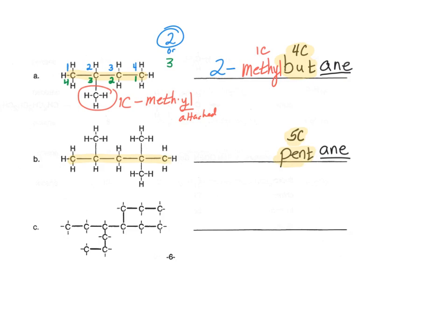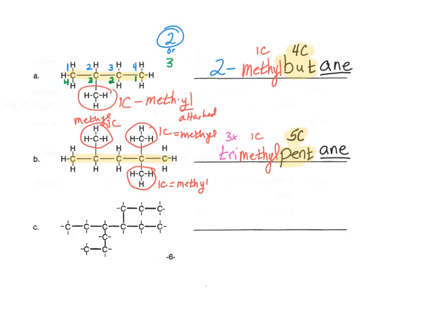We have three substituents, each with one carbon. One carbon is called meth-, and since it's attached it becomes methyl-, giving us methylpentane. Because there are three of them, it becomes trimethylpentane. Now let's number it. In the forward direction, the attachments are on carbons two, four, and four — totaling ten. In the reverse direction, the substituents are on two, two, and four — totaling eight. We choose the reverse direction because eight is less than ten. So our answer is 2,2,4-trimethylpentane.